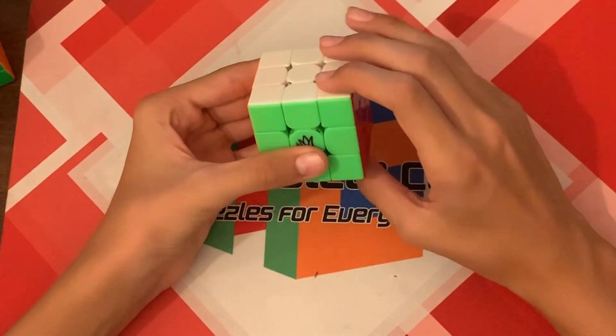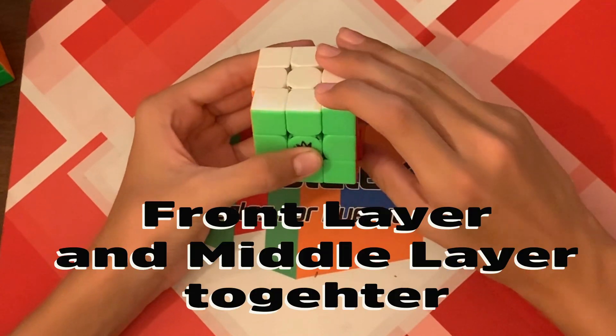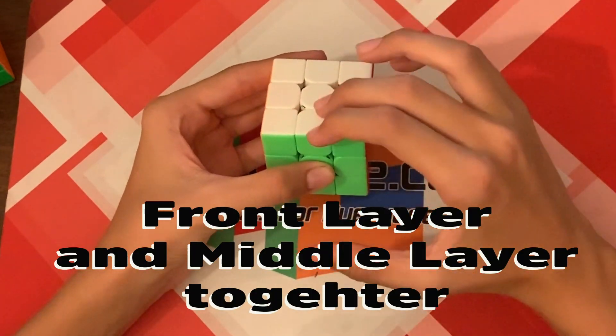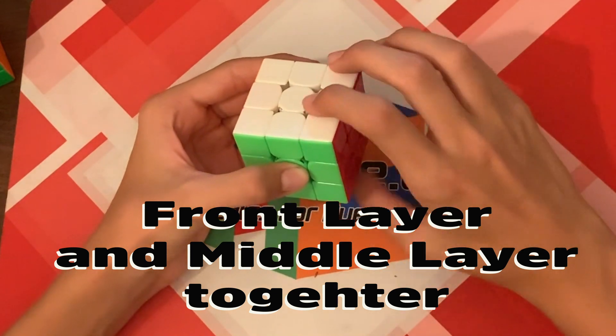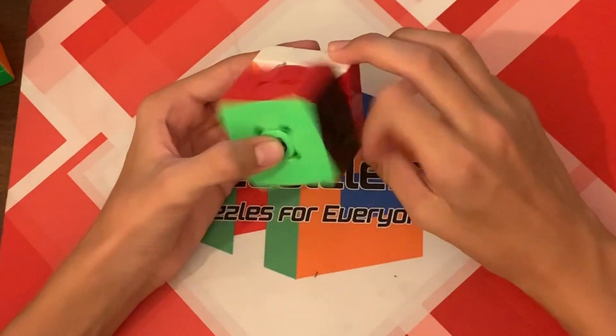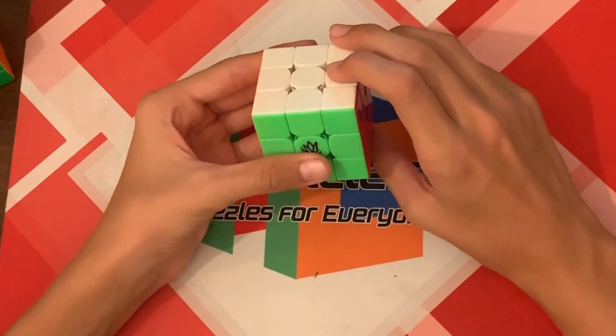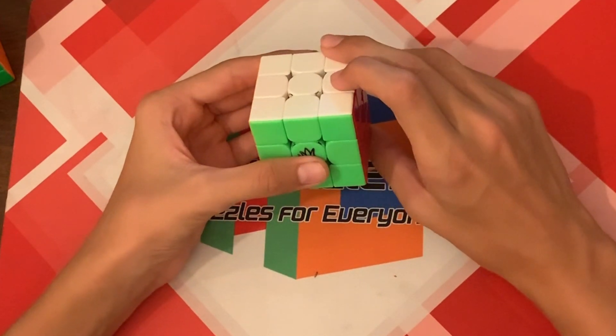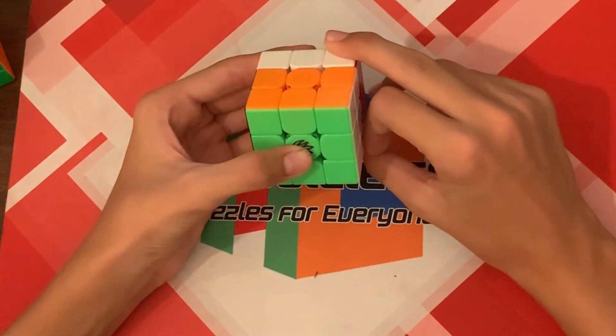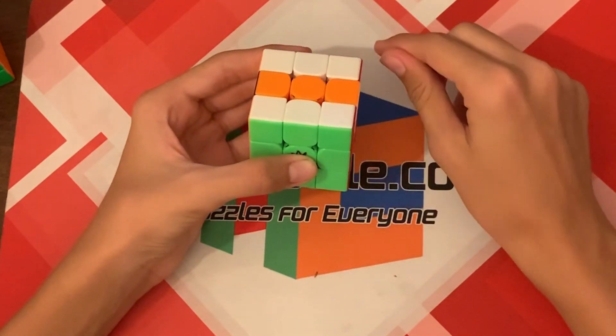But a wide F is this, the front layer and this middle layer. It's the two Fs, like that. So if I were to say wide F, F prime, this is what you would do. Wide F, F prime.